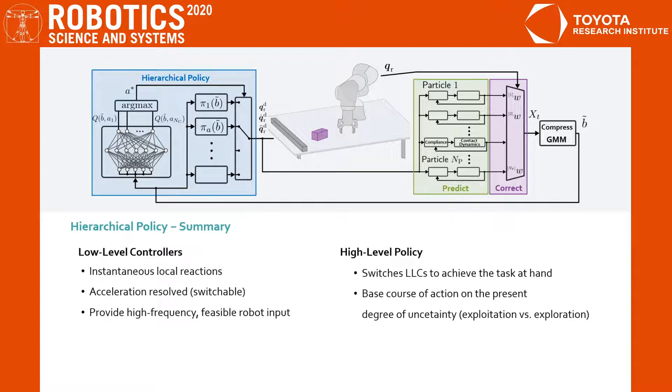Let's summarize the hierarchical policy. The low-level controllers take care of reactive interactions with the object. They provide the high-frequency, directly executable robot command and ensure that all motions are dynamically feasible for the robot. The high-level policy takes care of the long-horizon decisions to achieve the task at hand. It chooses the currently active controller based on the present degree of uncertainty that is encoded in the compressed belief.